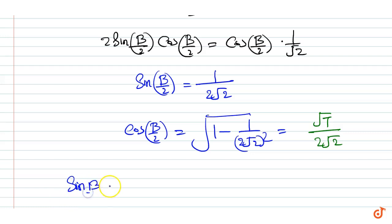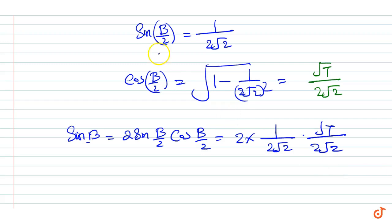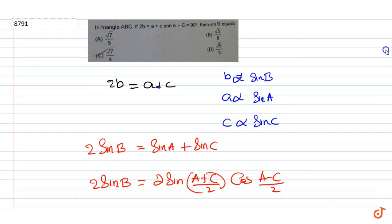Sine b is equal to 2 sine b by 2 times cos b by 2, which equals root 7 by 4. That is our answer, so the correct option is option C.